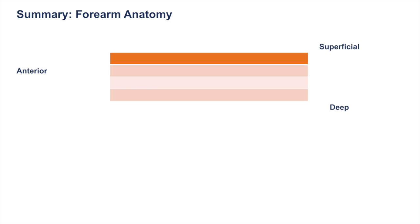To summarize what we learned: in the anterior portion of the arm, from superficial to deepest — the most superficial layer has the PFPF pattern, or "pass-fail, pass-fail": pronator teres, flexor carpi radialis, palmaris longus, and flexor carpi ulnaris. The second layer has flexor digitorum superficialis. The third layer has flexor pollicis longus and flexor digitorum profundus. And the deepest layer has pronator quadratus. Another memory tip: the most superficial and deepest layers both have a "P" for pronator and palmaris, while the flexors are all in the top three layers but not the deepest.